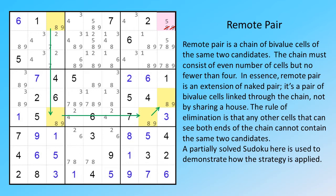It's a pair of by-value cells linked through the chain, not by sharing a house. The rule of elimination is that any other cells that can see both ends of the chain cannot contain the same two candidates.